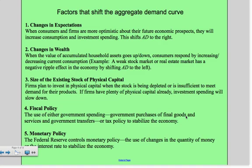Let's talk about factors that shift the aggregate demand curve. There are five that we'll cover. First is changes in expectations. If consumers and firms are optimistic, they'll increase consumption and investment spending at any price level. So that shifts the demand curve to the right.